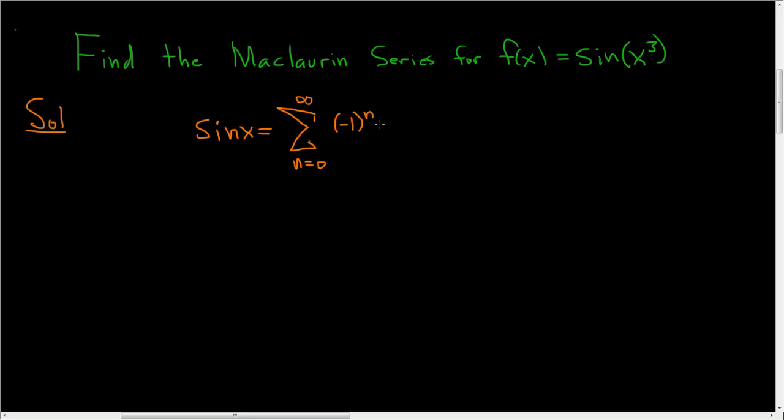And the sine function is odd, so the exponent here is odd, so 2n + 1. And then you just divide by (2n + 1) factorial.